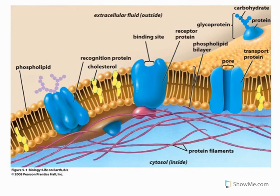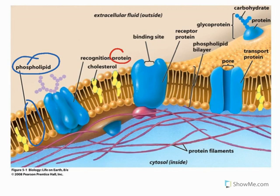Review of membrane structure and transport across the membrane. Very briefly going over membrane structure, the two most important molecules are the phospholipids — those are the orange molecules here — and all of the different proteins. The proteins do all kinds of different functions.